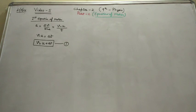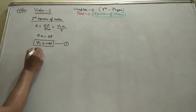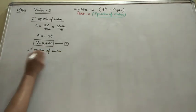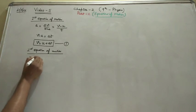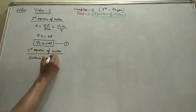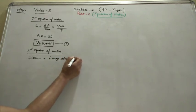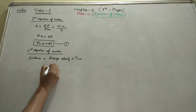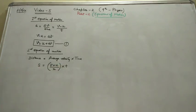Now for the second equation of motion. To find this, we know distance is equal to average velocity into time, and average velocity is equal to the mean of final velocity and initial velocity, multiplied by T.